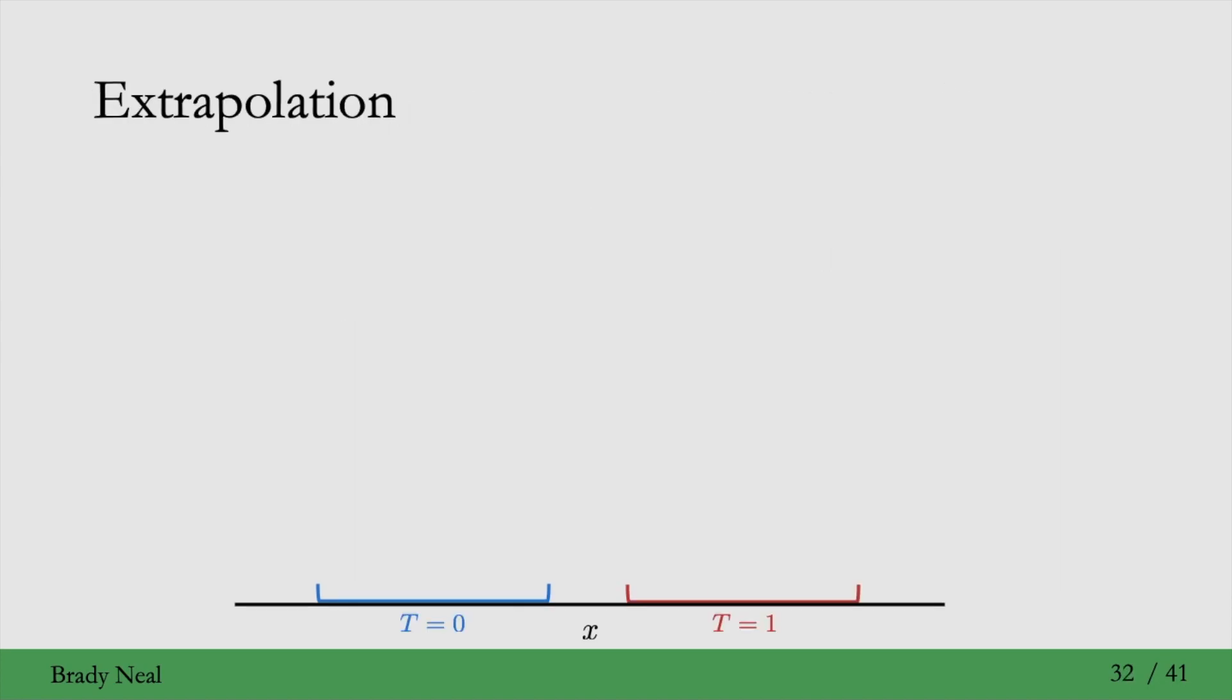What would actually happen if you were to try to estimate the average treatment effect when you have a severe positivity violation? So we're depicting a severe positivity violation in the bottom here by showing that the covariate distribution, or the supports of the covariates in the control group (T=0) and the treatment group (T=1), do not overlap at all. And here's a reminder of what the adjustment formula looks like when x is discrete. What we'll do is we'll model this conditional expectation of Y given treatment equals 1, x, with a function f₁(x), and we'll do the same with the conditional expectation for the control group with the model f₀(x).